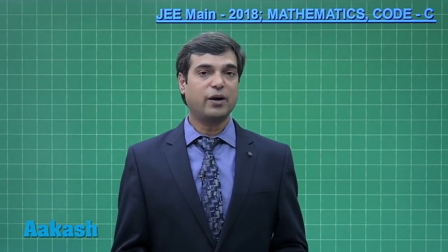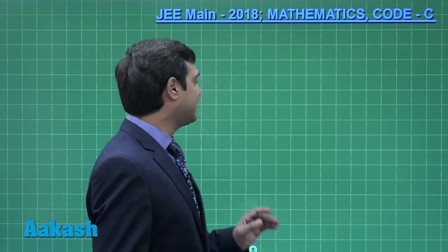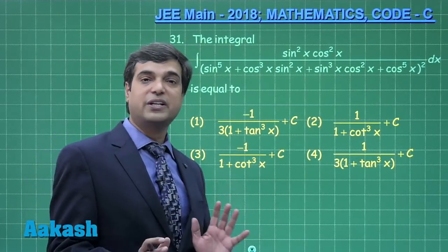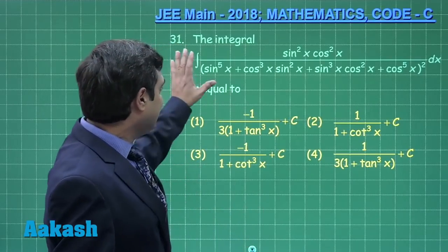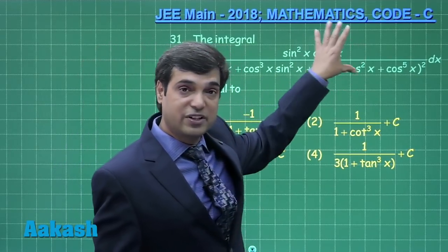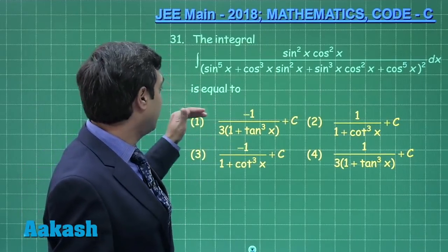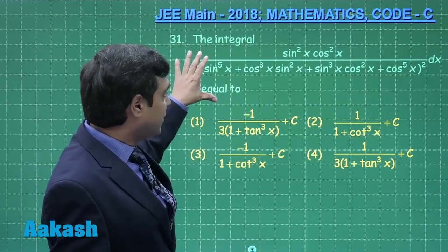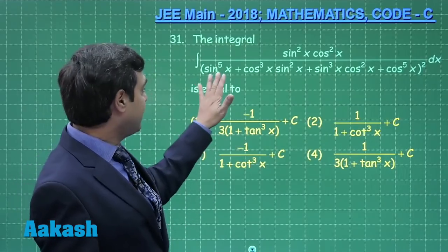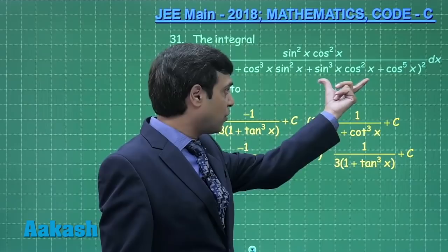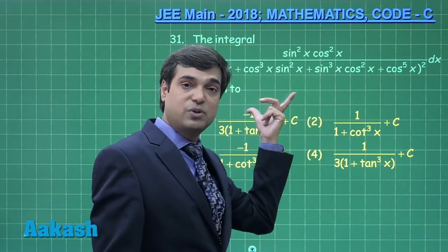Hello students, today we are going to talk about JEE Main 2018 paper. Let us discuss the maths part with code C, starting with question number 31, which is a question from integration. An integral involving trigonometric terms is given and we have to find its value. Looking at the denominator expression, it is sin⁵x plus sin³x·cos²x.